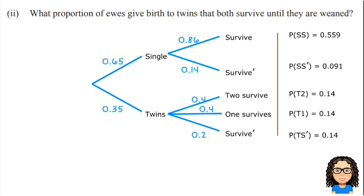So let's have a look at the wording of this question. What proportion of ewes give birth to twins that both survive? So remember, what I want to do is I want to look at my different combinations here, and I want to find the one that talks about twins and both surviving.